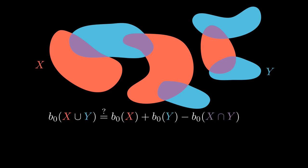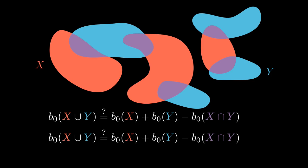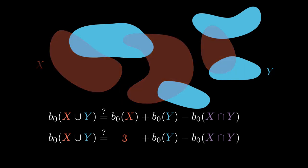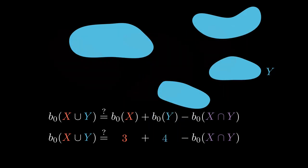Here are some blobs. The red blobs we'll call X, the blue blobs we'll call Y, and the intersection of X and Y we'll draw in purple. We want to count the number of connected components of X union Y — the number of pieces when we view all these blobs together. Let's suppose that B₀ satisfies inclusion-exclusion: B₀ of the union equals B₀ of X plus B₀ of Y minus B₀ of the intersection. Just looking at X by itself, there are three pieces. And just looking at Y by itself, there are four pieces.